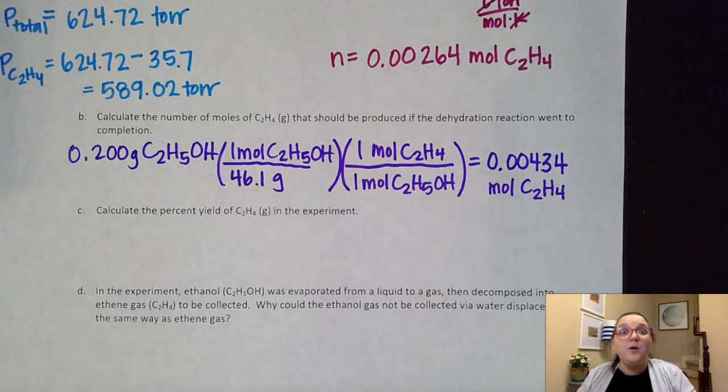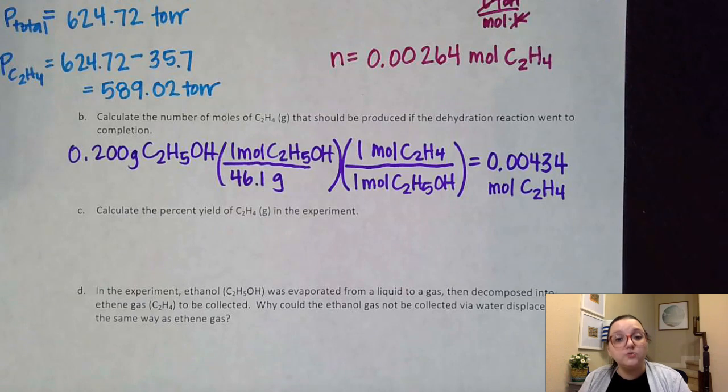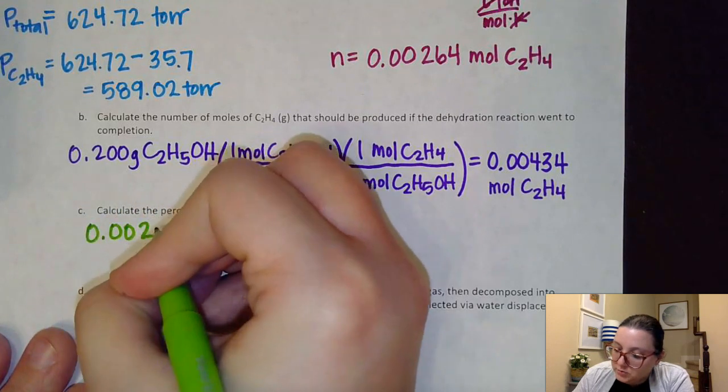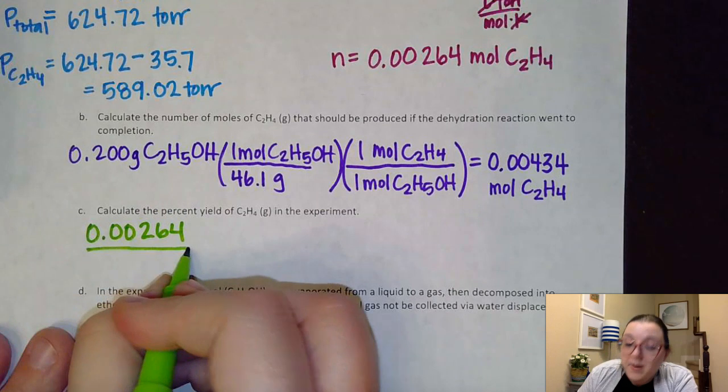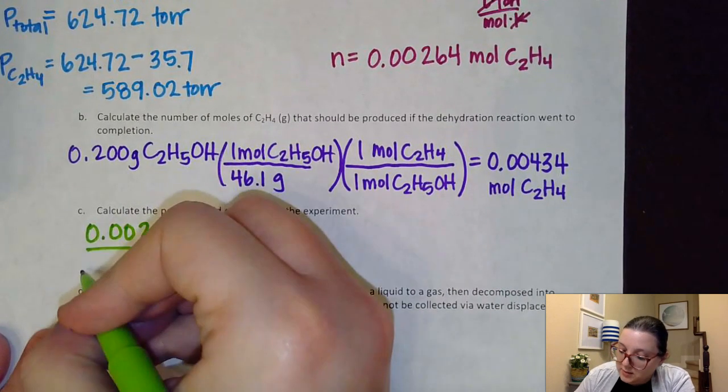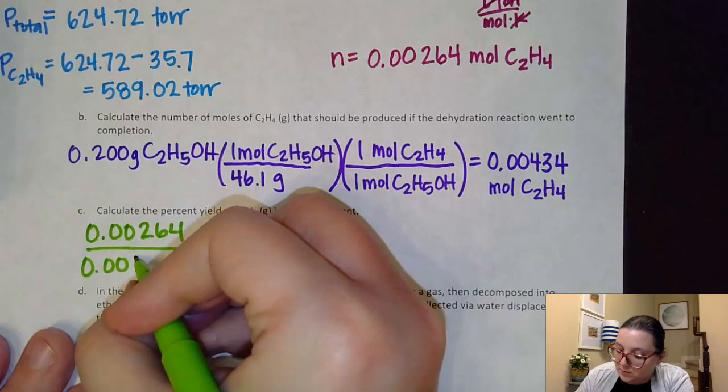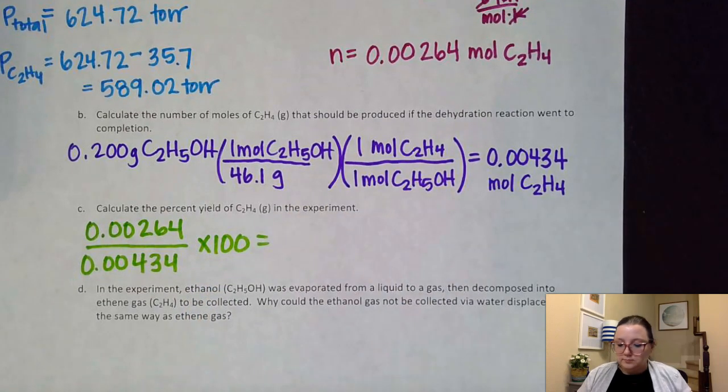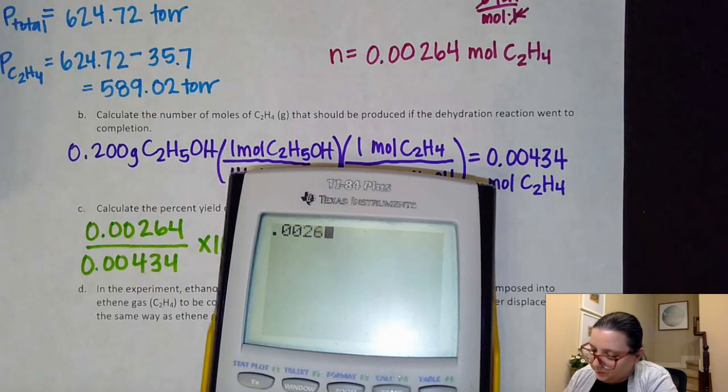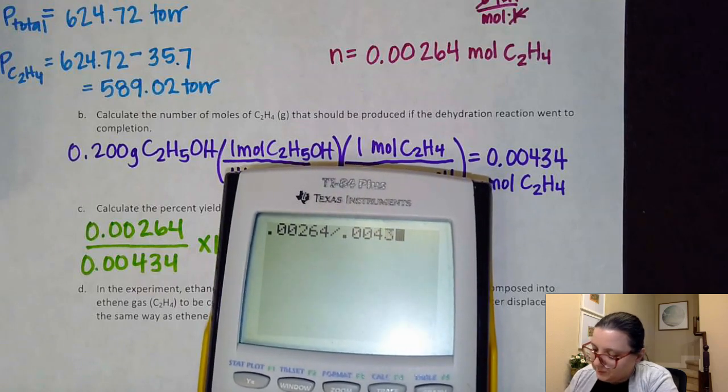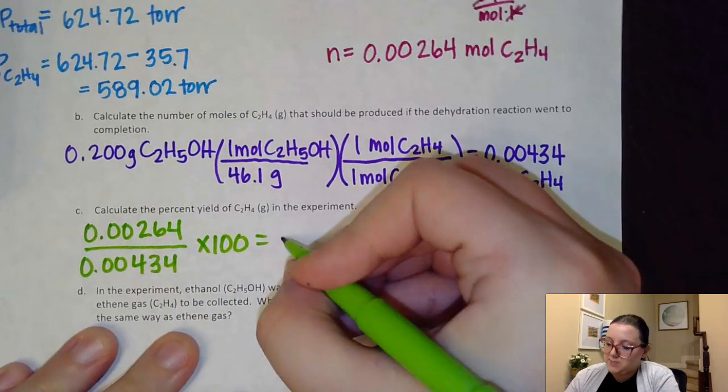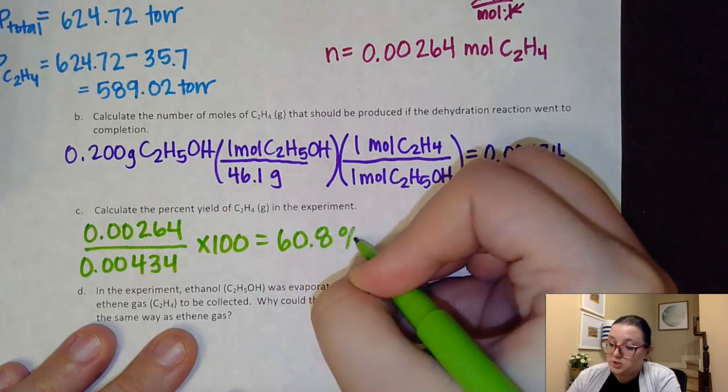Obviously, I didn't make that much. So there should be some sort of error in the lab. So it asked me to calculate a percent yield of C2H4 in the experiment. This is where I would do my experimental, the 0.00264 number, over my theoretical, which we got from my stoichiometry. This is how much I should have been able to make if everything went perfectly. And then I times that by 100 to get it into a percent. So 0.00264 divided by 0.00434 times 100 gets us 60.8%. So that means I made 60.8% of what I should have been able to make.